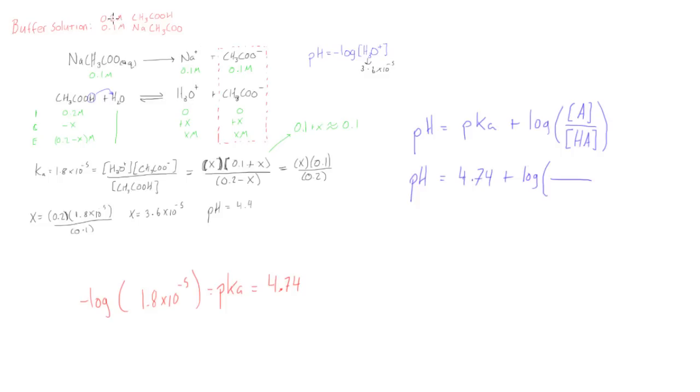The concentration of our weak acid is 0.2 molar, and then our conjugate base here is going to be 0.1 molar. So if you're able to identify which one is which, this is a really fast way to do it.